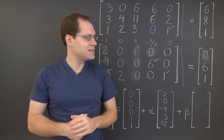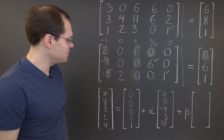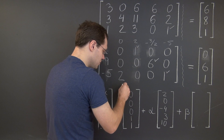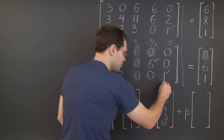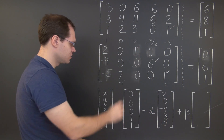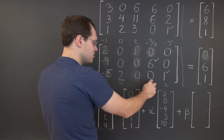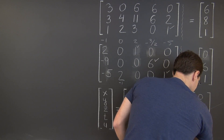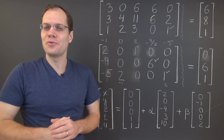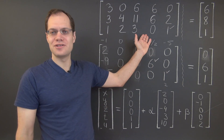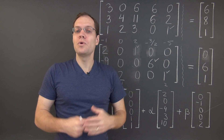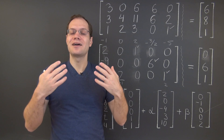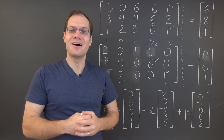For the final element in the null space, we use this second non-pivot column, which takes exactly 2 of the 5th column to replicate. So I take negative 1 of this column and 2 of this column, giving the vector 0, negative 1, 0, 0, 2. And there you go — we have obtained the complete general solution to this system, even though we pursued Gaussian elimination in a somewhat unorthodox way. But it was completely pragmatic, and that's the message of this video.